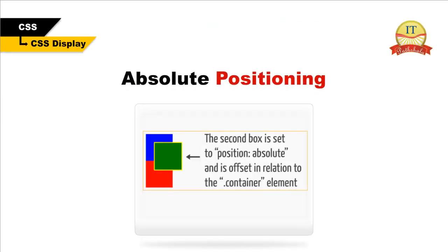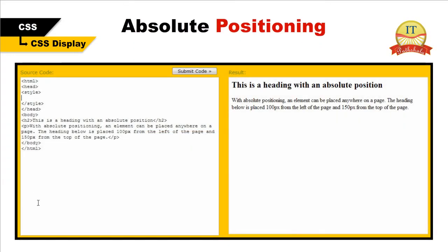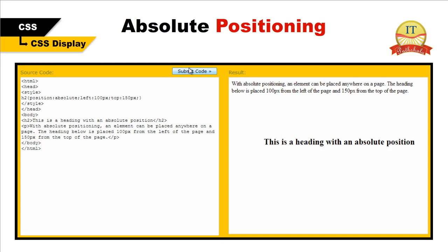Absolute positioning can be very useful for creating advanced layouts and cool visual effects such as overlapping elements to present a layered effect. To perform absolute positioning in CSS, you set the value of the position property to absolute, followed by the desired offset. Absolutely positioned elements are removed from the normal flow — other elements behave as if the absolutely positioned element does not exist, and they can overlap other elements.